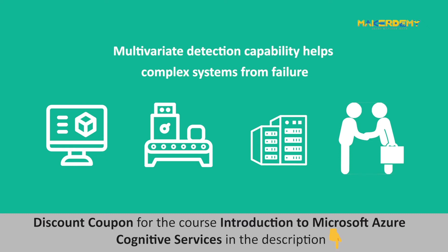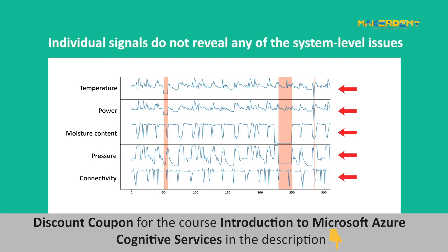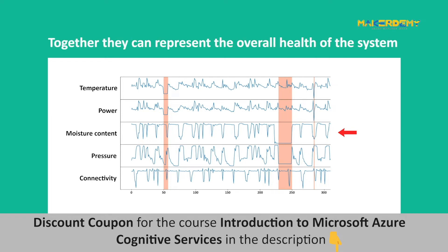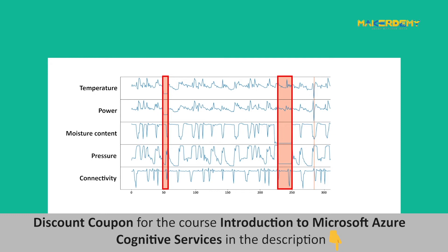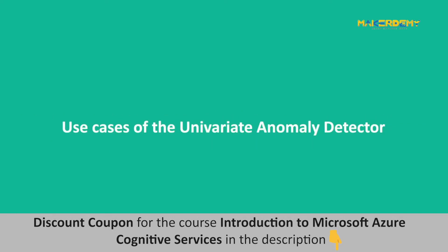The multivariate detection capability helps us to proactively protect complex systems such as software applications, factory machines, servers, or even a business from failures. Imagine a scenario of 10 sensors inside a server room generating 10 different signals like temperature, power, and moisture content. The readings of these signals individually do not reveal any system level issues, but together they can represent the overall health of the system. When the interaction between these signals deviates outside the usual range, multivariate anomaly detection can sense the anomaly like an expert. The underlying AI models are trained and customized based on our data.